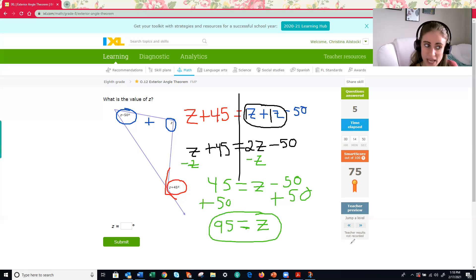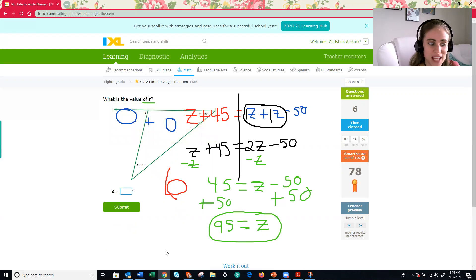So we answered our question. We found the value of z is 95. Let's just make sure. There we go. And most likely you'll have to answer about two of those to get yourself up into the 80 smart score if you're trying to shoot for that 100%.